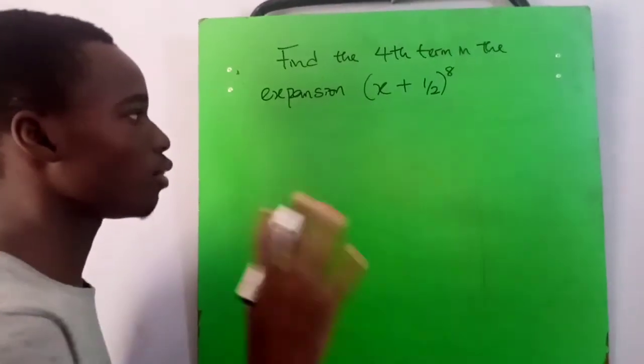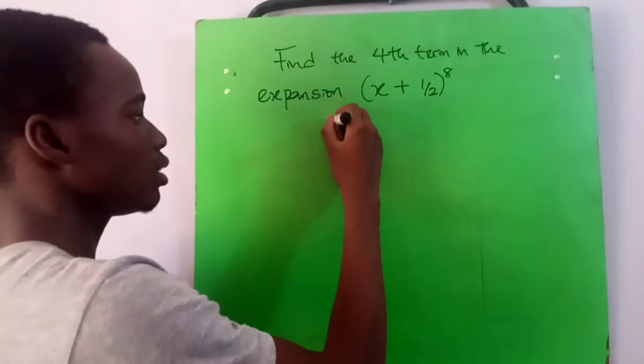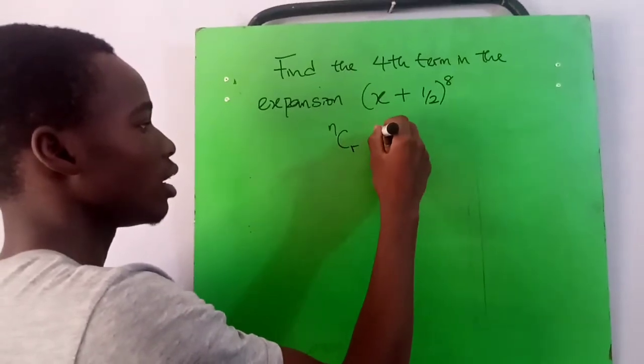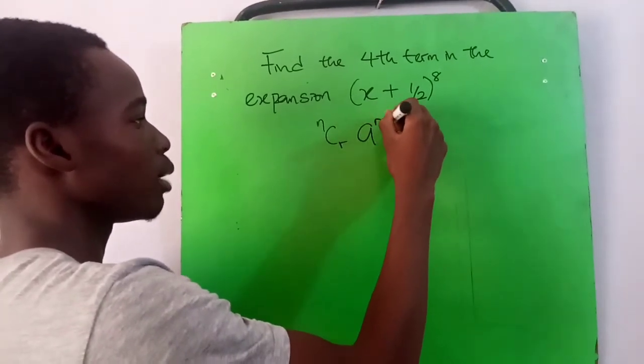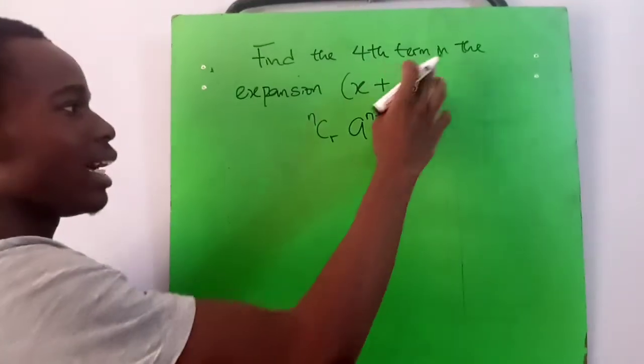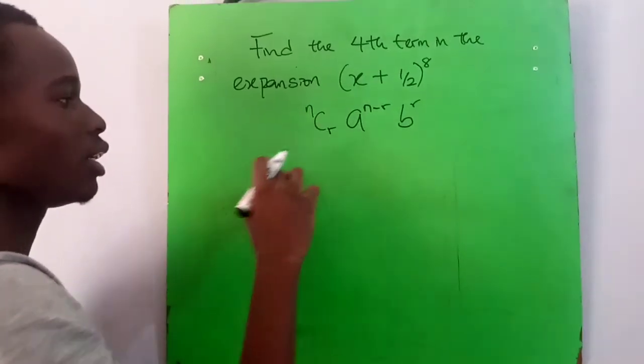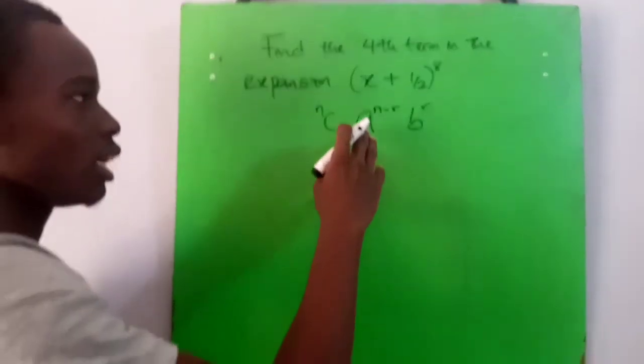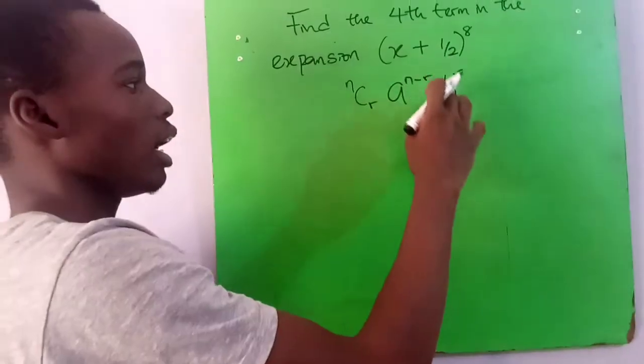Like in the previous video, I showed you. The first thing is to write out your formula. So that's nCr a^(n-r) b^r. n is the exponent, r is the term minus one, a is your first term here, and b is the second term.